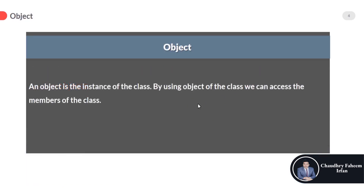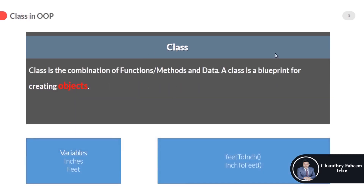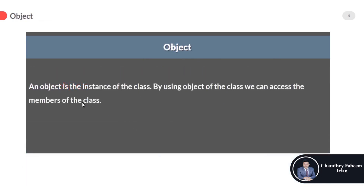An object is the instance of the class. By using an object of the class, we can access the members of the class. You need to have a class before you can create an object.